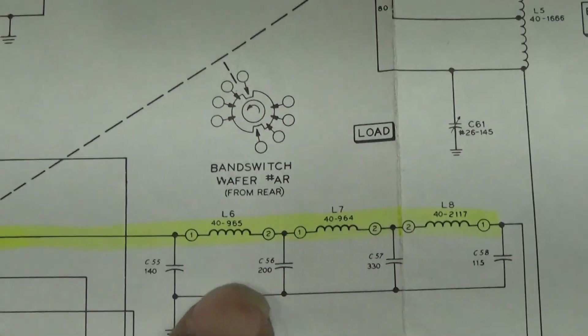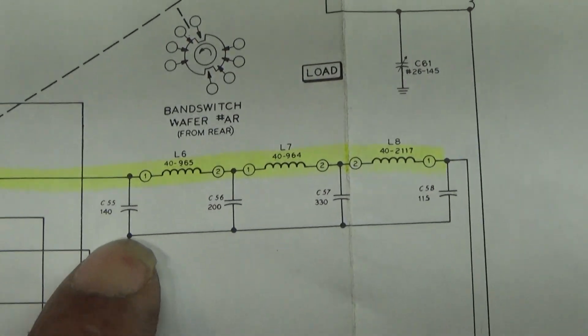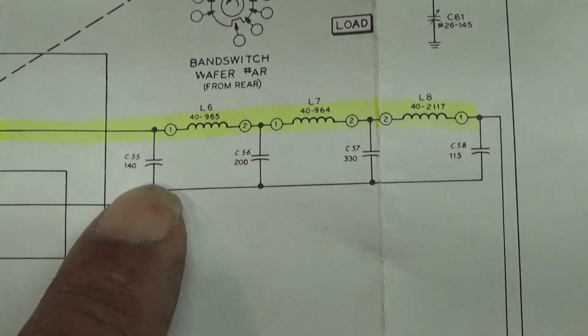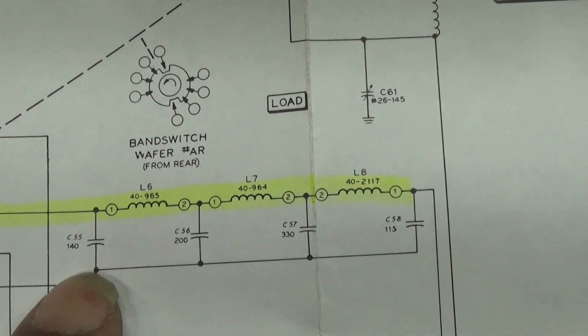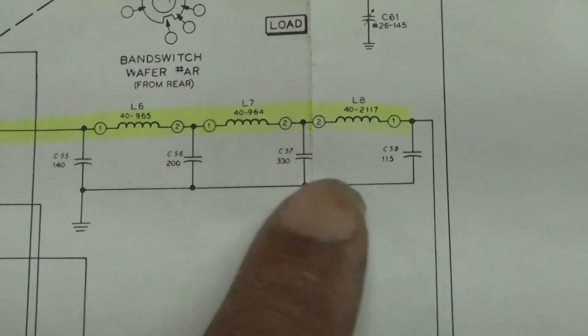...band block or trap right there. In the schematics and in the manuals they don't tell you that that's an 11 meter block. They call it a filter, that's what they call it. And yeah, it's a filter alright, it filters out 11 meters. And actually, if you see here, these are the normal pi circuits for the input.